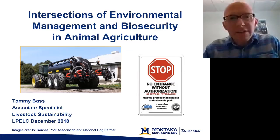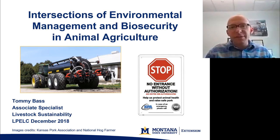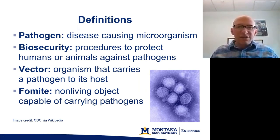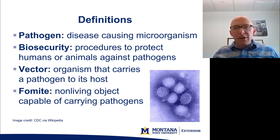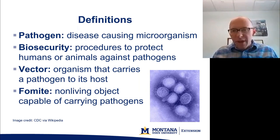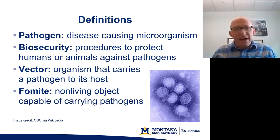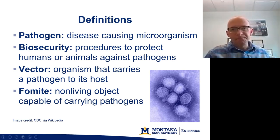To begin, this is about intersections of environmental management, biosecurity, and animal agriculture. Some key definitions: pathogens are disease-causing microorganisms, and biosecurity refers to the procedures and best practices used to protect humans or animals against the impacts of pathogens. Regarding how pathogens spread, vectors are living organisms that can carry a pathogen to a host, while fomites are inanimate objects — such as equipment, tools, and vehicles — that can carry pathogens.